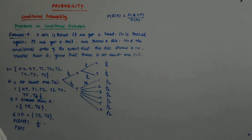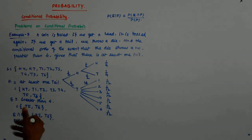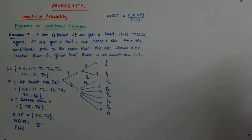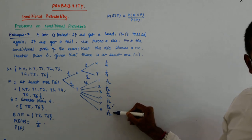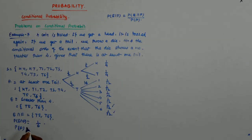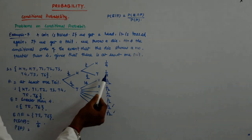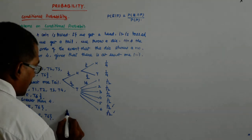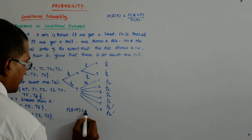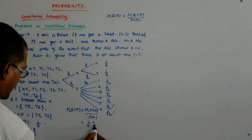And what is the probability of F? It is 1 upon 12 for each outcome. They sum to half — 1 by 12 into 6 is half — plus 1 by 4. So that is 3 by 4. So P(E|F) = P(E∩F) / P(F) = 1 upon 6 divided by 3 by 4, that is 4 by 3.